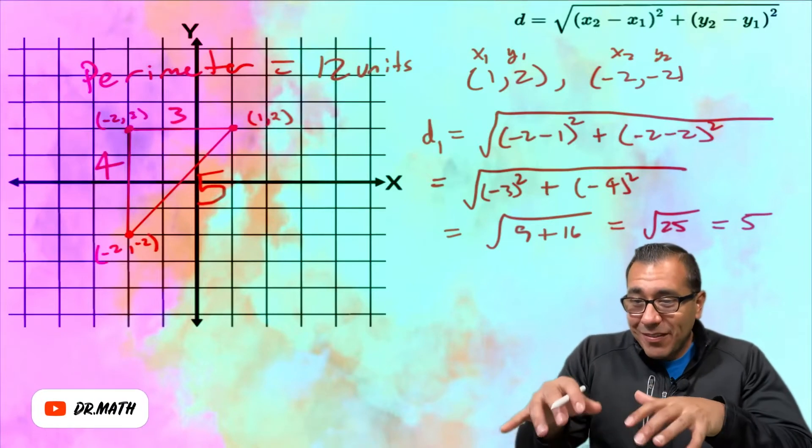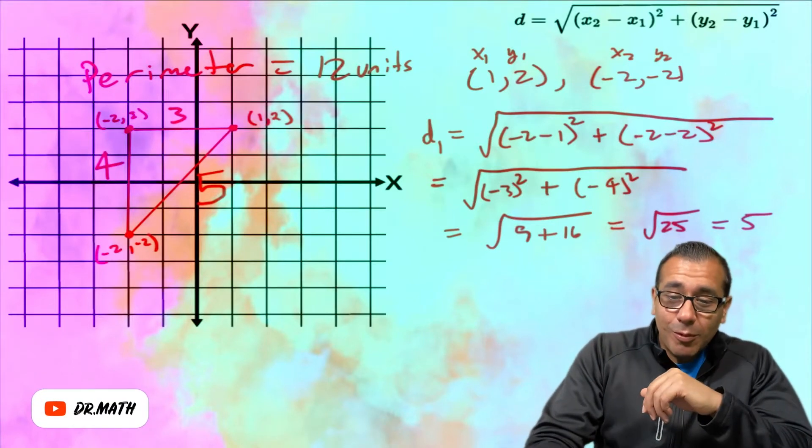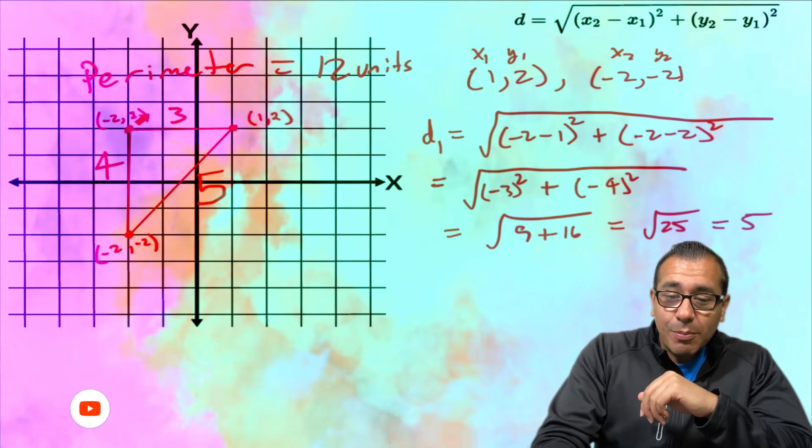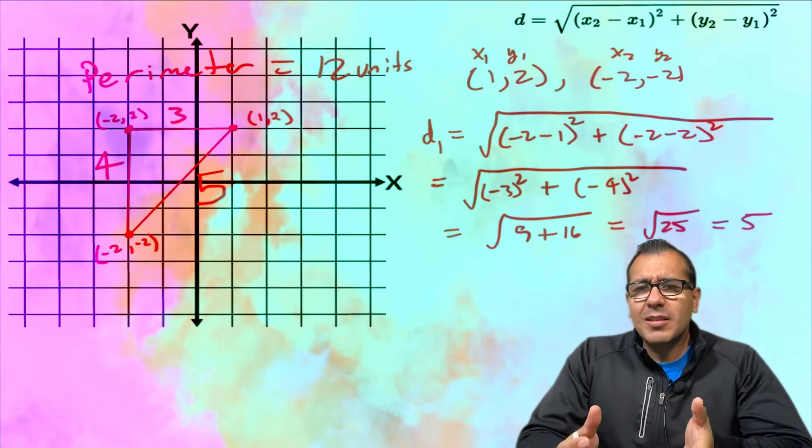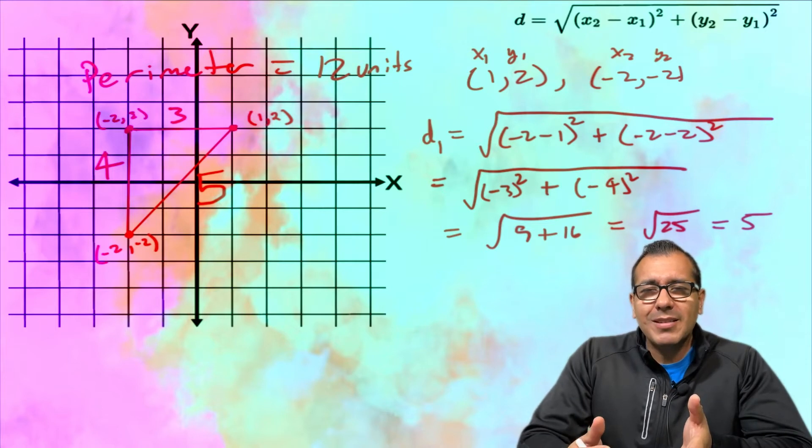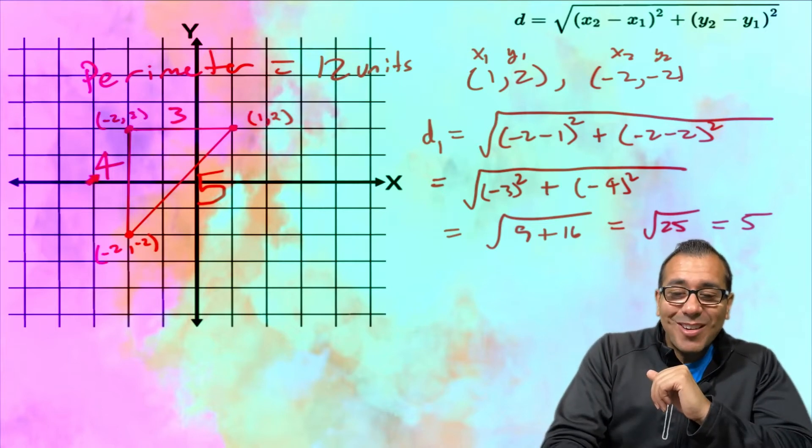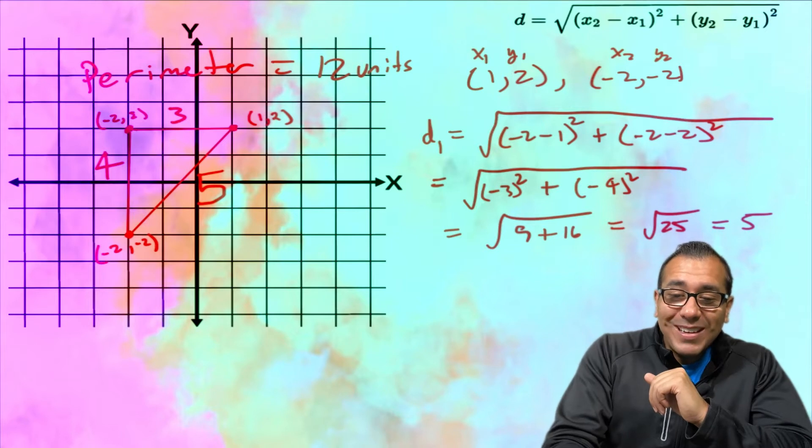All right mathletes, so we have this problem here for you and people are wondering how do I find the perimeter of this triangle. Some of you are wondering why is this triangle already filled out - I could just add all the sides. But what I'm saying is what happens when the sides aren't given and they only give you the points?